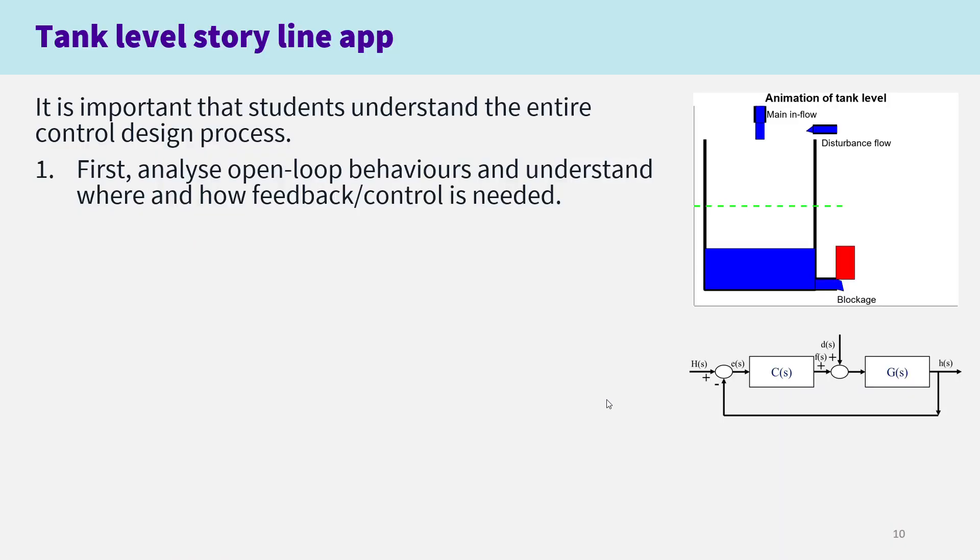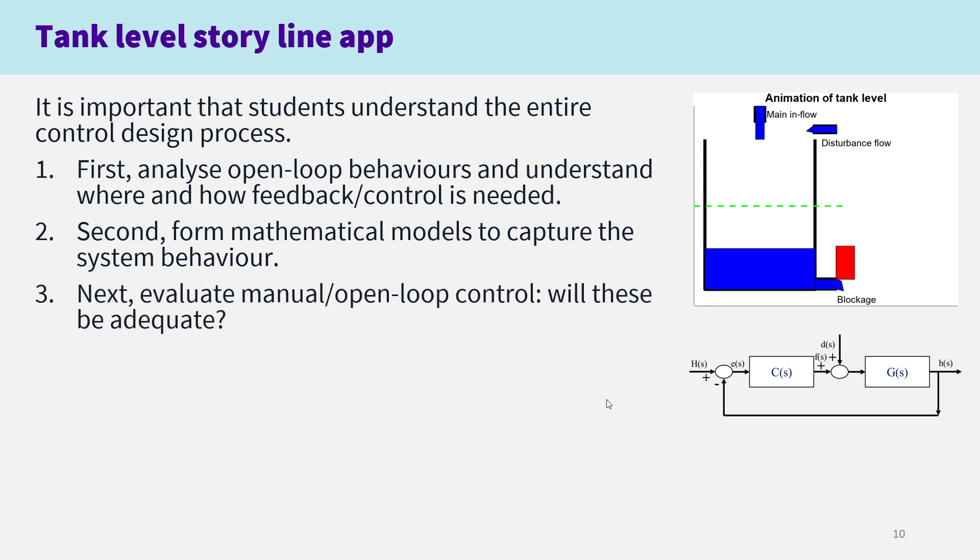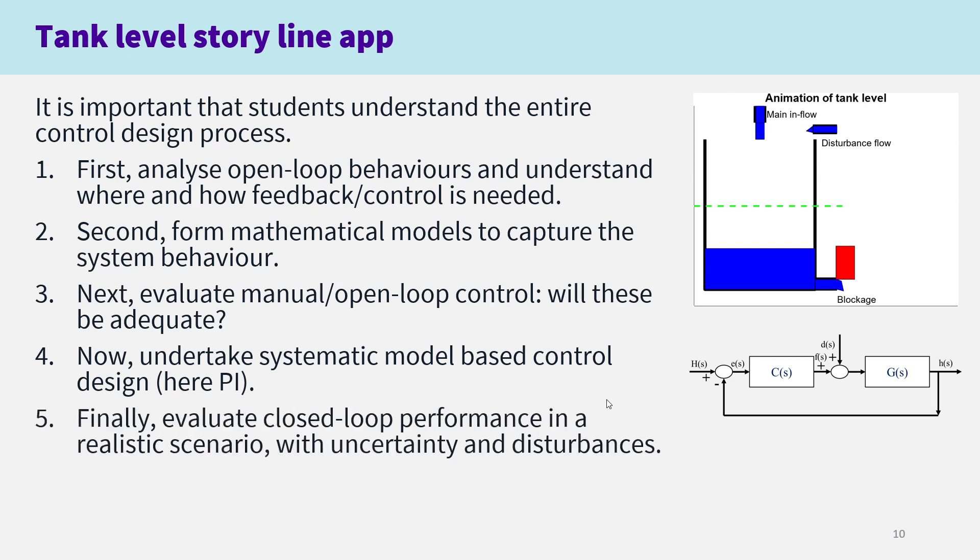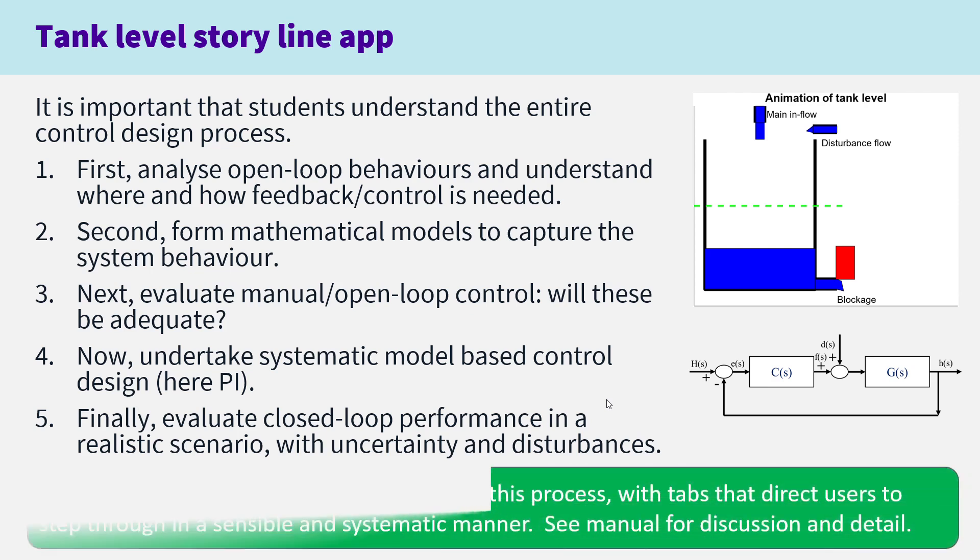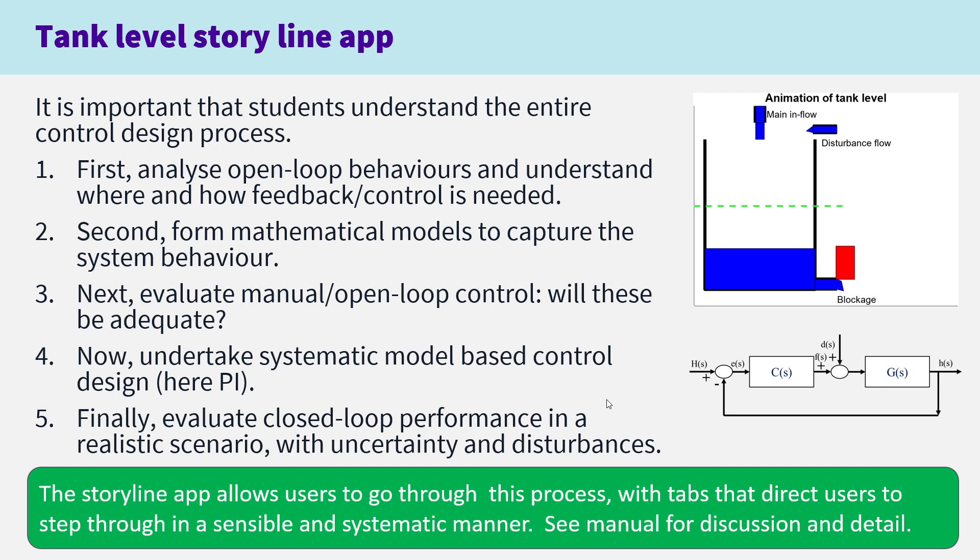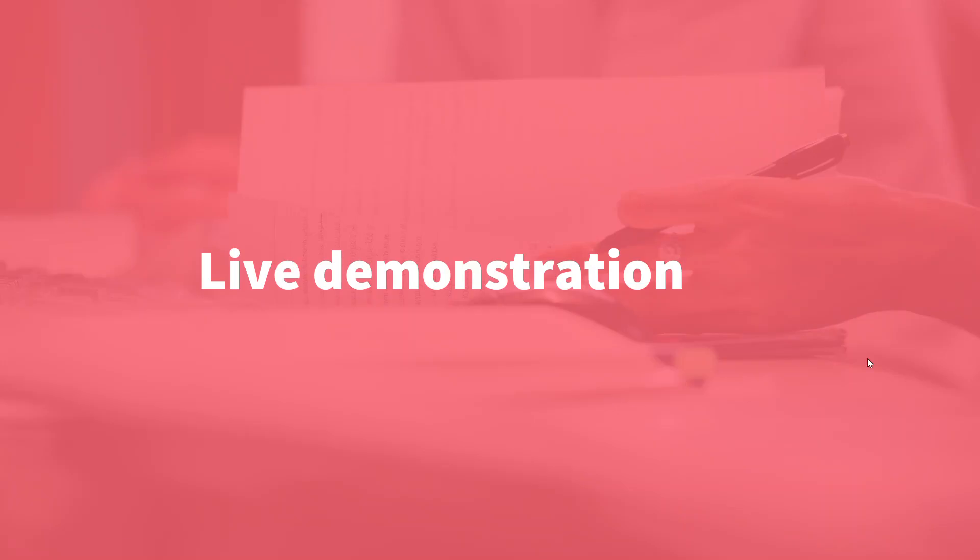The final one: tank level storyline app. It's important that students understand the entire control design process. First, analyze open-loop behavior and understand where feedback control might be needed. Second, form mathematical models to capture the system behavior. Third, evaluate manual or open-loop control. Next, undertake systematic model-based control designs such as PI. Finally, evaluate the closed-loop performance in a realistic scenario with uncertainty and disturbances. The storyline app allows you to go through this process, steps one to five.